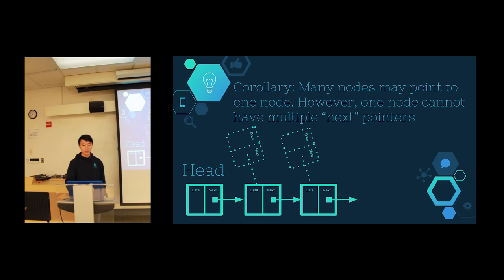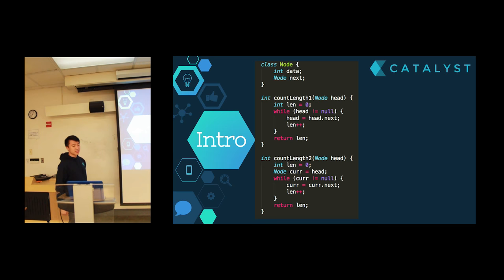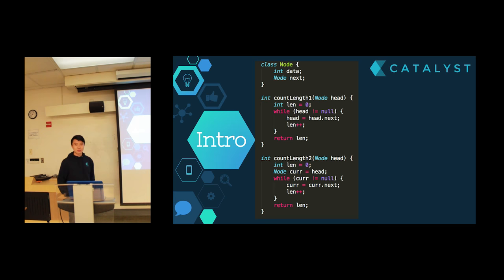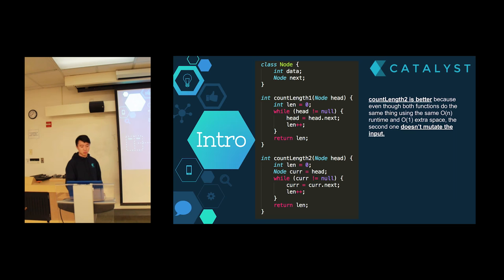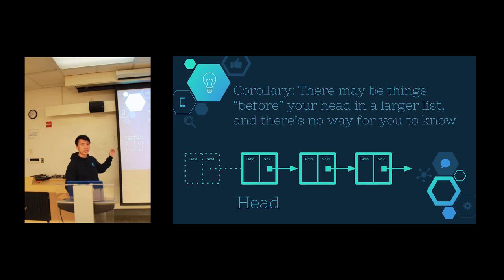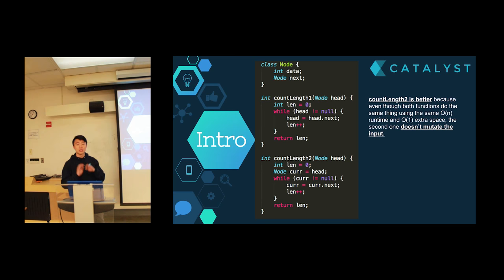Looking at a sample code snippet: we define a class Node with int data and a Node next. We have two ways of counting the length of a linked list. The second method is better because you create another pointer to the head, so you don't lose access to the head. Both use O(n) extra space and take O(n) time, but if you lose access to the head, you lose access to whatever was before it in your linked list. That's why it's important to not mutate the input and to define a separate traverser node.